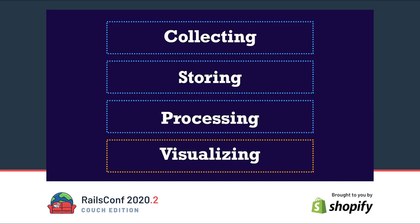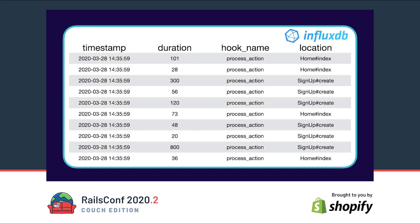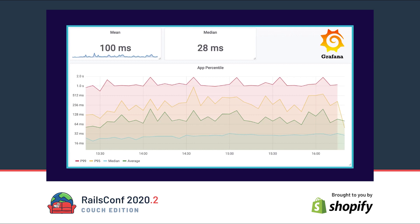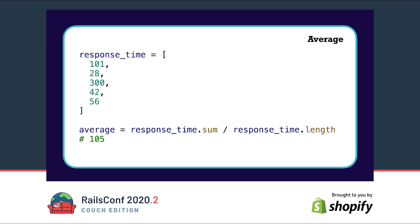In the last chapter we will look into visualizing the collected metrics. Why is visualizing even necessary? If we have only a few metrics we can easily spot a problem, but in a real world application we would have thousands or even millions of data points — it would be impossible to spot any problems. If we visualize our metrics in a dashboard we can see that most users have a response time between 16 and 60 milliseconds, but some users experience up to one second — a big problem. Some metrics we can calculate are the average, which is the sum of all values divided by the number of values — in this case 105 milliseconds.